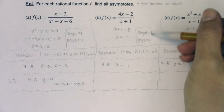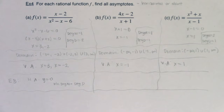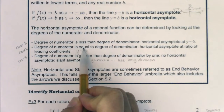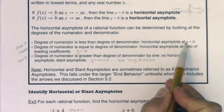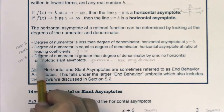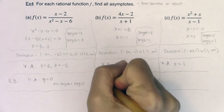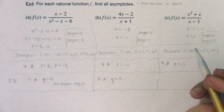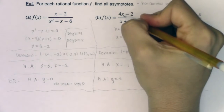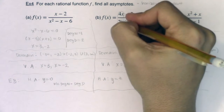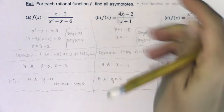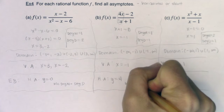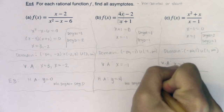For the second function, the degree in my numerator and denominator are both 1 — they're equal to each other. When the degrees are equal, I still have a horizontal asymptote, but this time it won't be y equals 0. I need the ratio of the leading coefficients. The lead terms are 4x over x, so 4 divided by 1 is 4, and my horizontal asymptote is y equals 4.